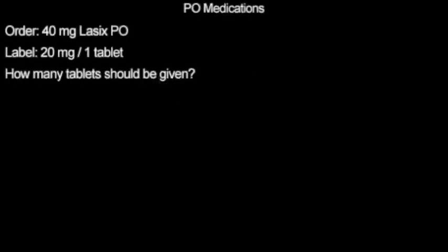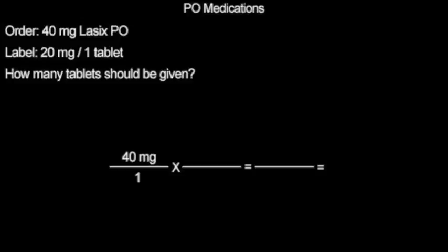Now that we have covered basic conversions, we will move on to calculating specific types of medication dosages, starting with PO or by-mouth medications. There is an order for 40 milligrams Lasix by mouth. The label states that there are 20 milligrams per one tablet. How many tablets should be given? We start with our 40 milligrams of desired dosage. Multiply by one tab, which is 20 milligrams. Cancel like terms and multiply across. We are left with 40 tablets over 20. Divide and we are left with our dose being 2 tablets.